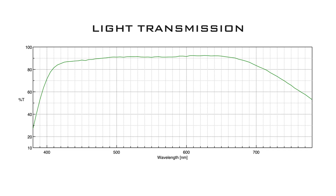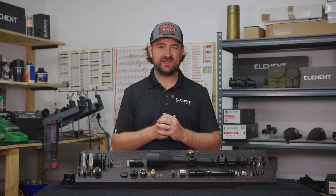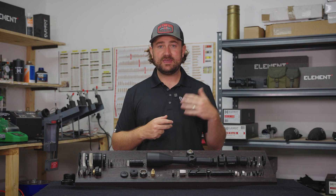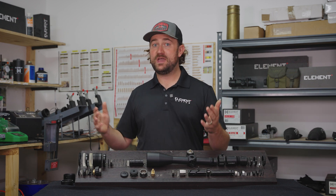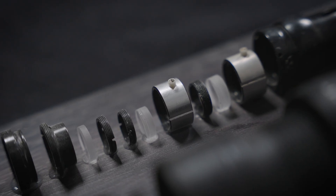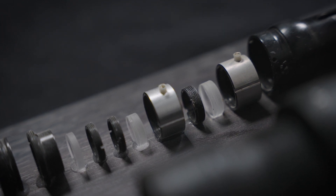Every optical system can be analyzed for light transmission on a graph like this, with the wavelength of light in nanometers along the bottom. Typically the human eye can see between 380 and 700 nanometers. The light we really care about is within the visible light spectrum, and that's why broad light transmission specs can be deceiving — one scope may have better overall light transmission, but because of the color hue or the specific wavelengths being transmitted, it may actually perform worse in low light conditions or at certain times of day.